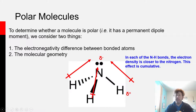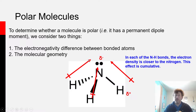Each of the bond dipoles in the hydrogen-nitrogen bonds points the same way — the negative end pointing towards the nitrogen, the positive end at the hydrogen. Looking at the molecular geometry, it's like adding all these arrows together: this arrow points this way, this arrow points this way, this arrow points this way. That means the negative end of the molecule is at the nitrogen end, and the positive end is at the hydrogen end. So ammonia is a polar molecule — it has a relatively negative end and a relatively positive end, an electron-rich end and an electron-poor end.